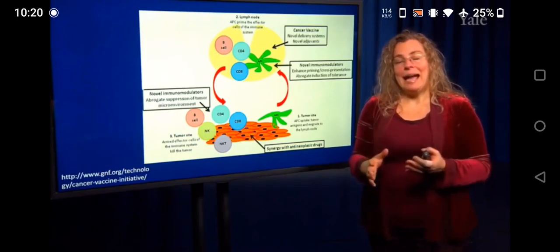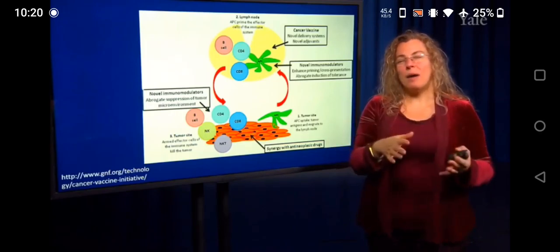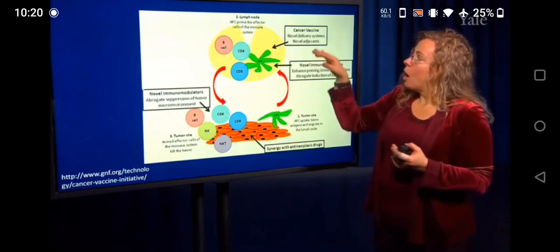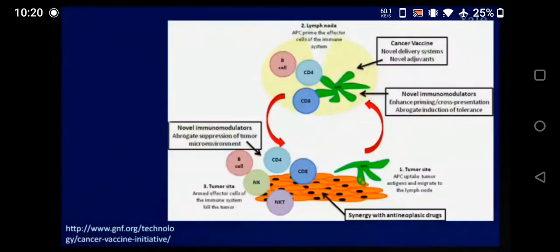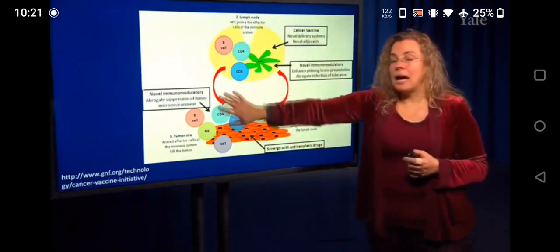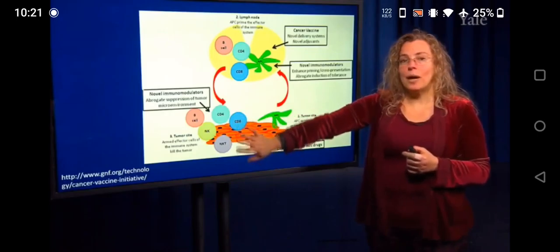With a cancer vaccine, we're trying to stimulate an immune response in the lymph nodes, activate T cells and B cells, and activate an adaptive immune response that has not yet been activated. If these are activated but they're still not killing the tumor, then we have to modulate what's going on at the tumor site, where there's probably suppression of these activated or effector cells.